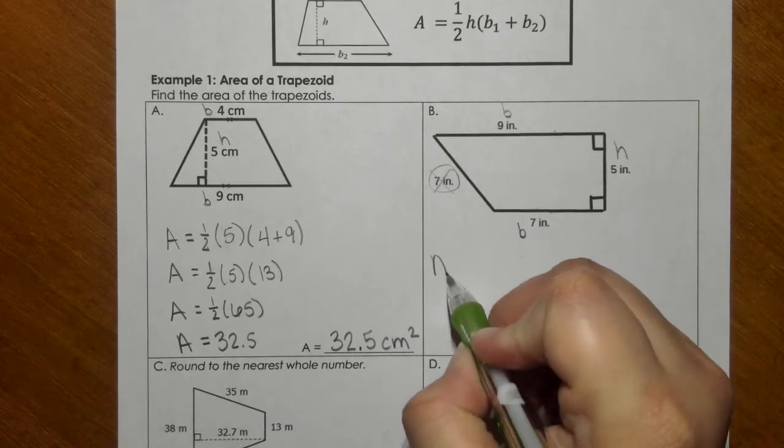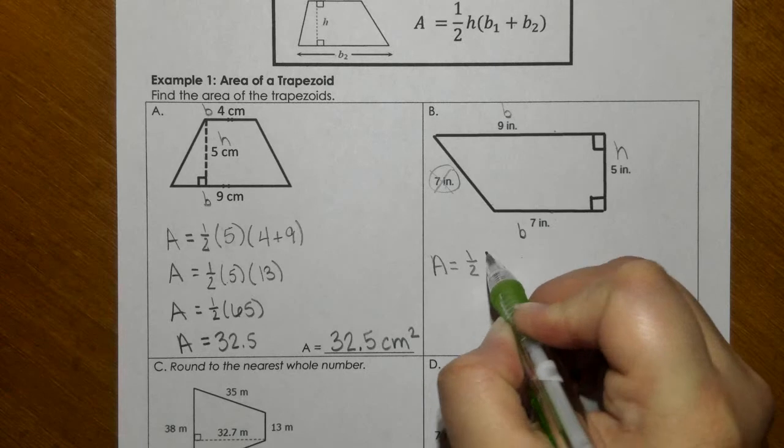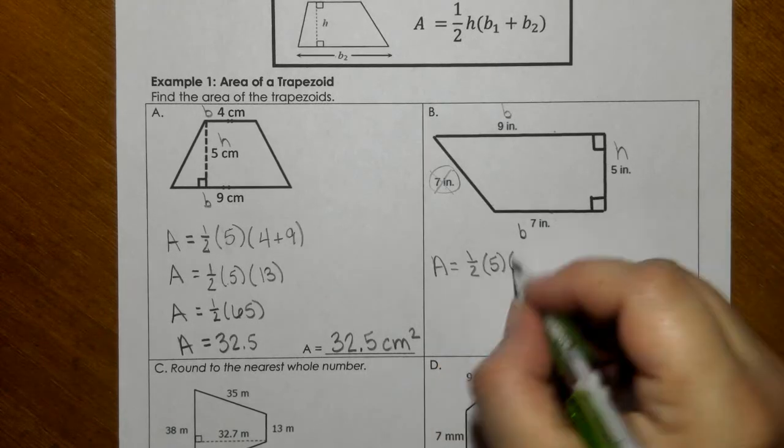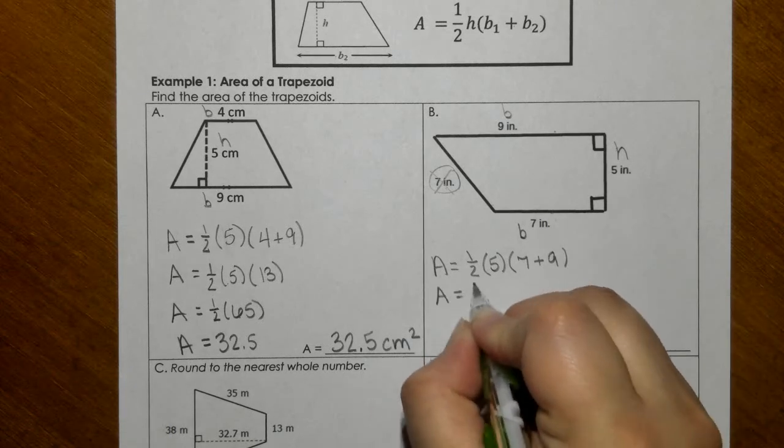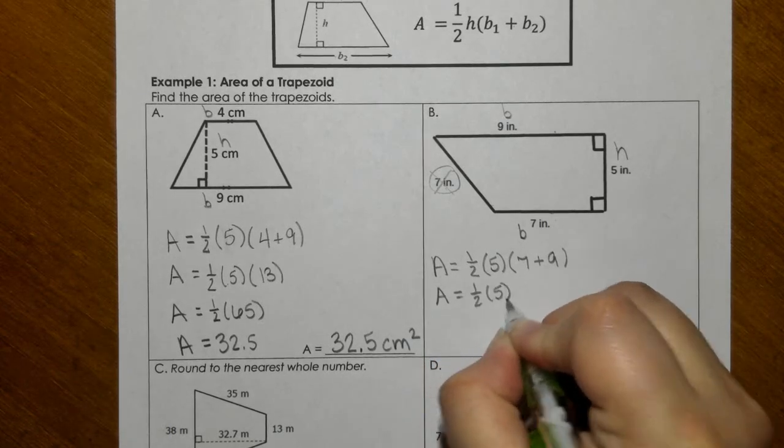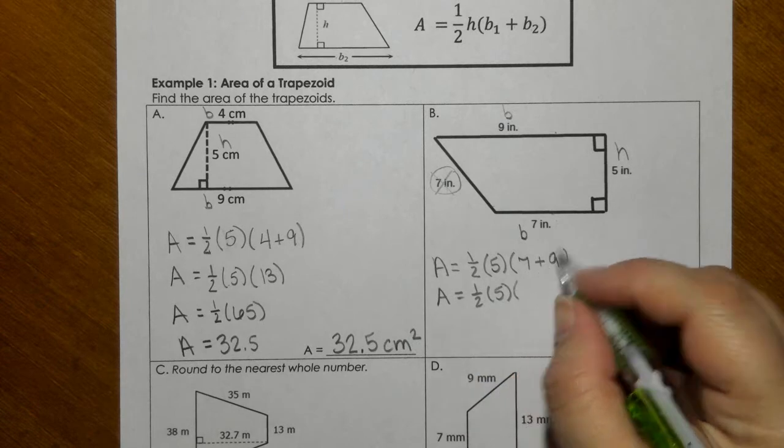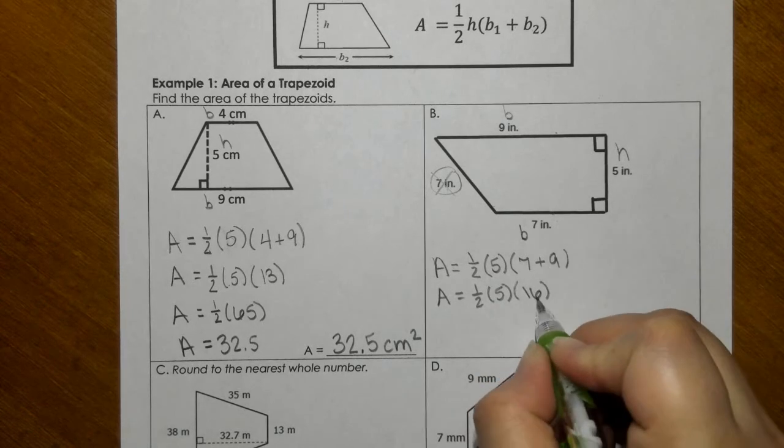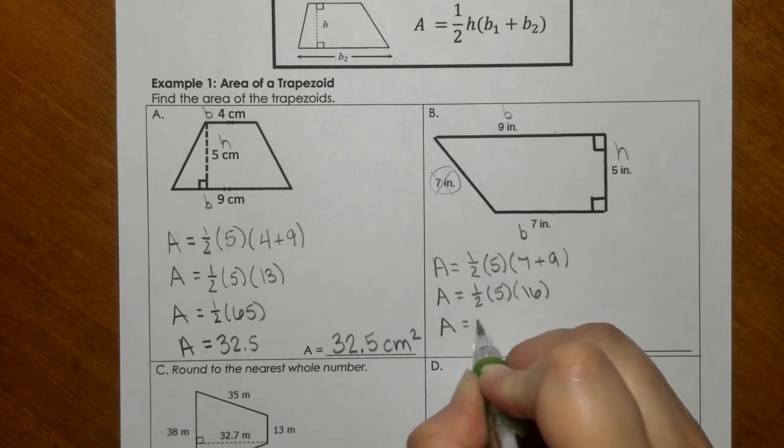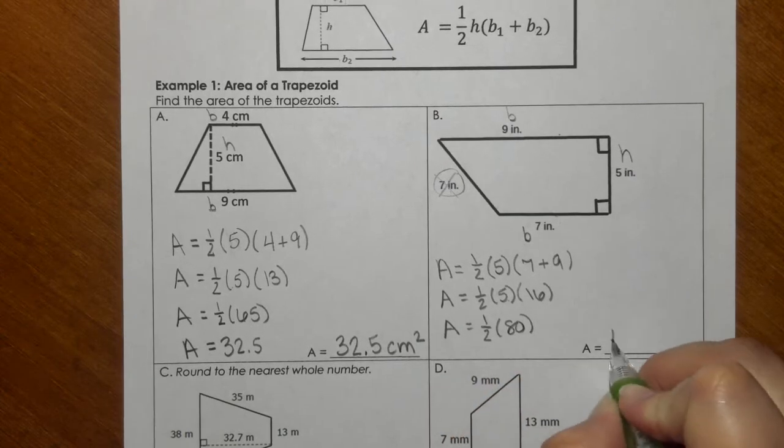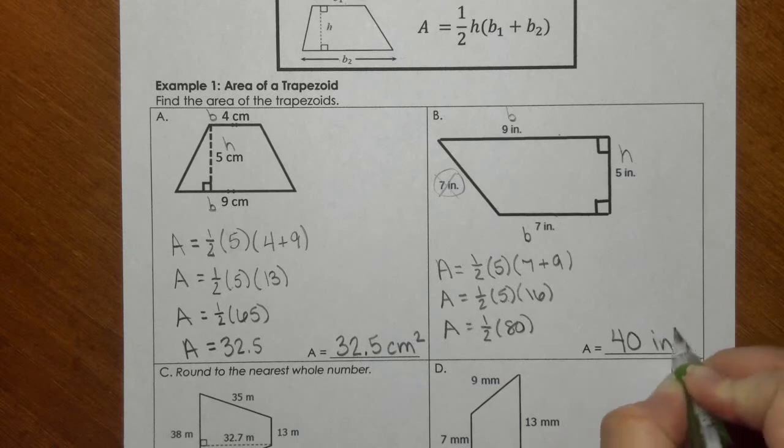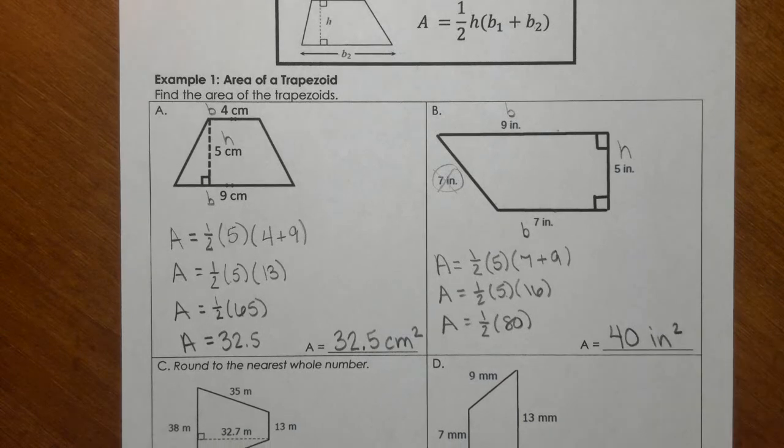So the area would be one-half times 5 plus your bases, so 7 and 9. That would make 16. 16 times 5 gives you 80, and then if I take half of 80, 40 inches squared.